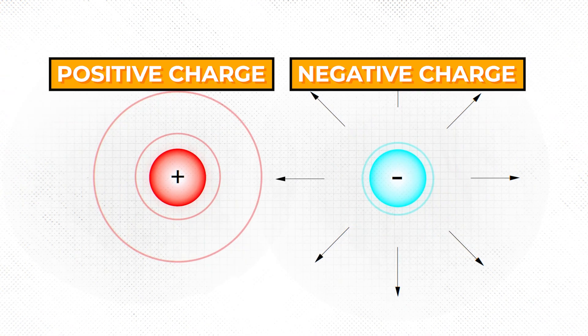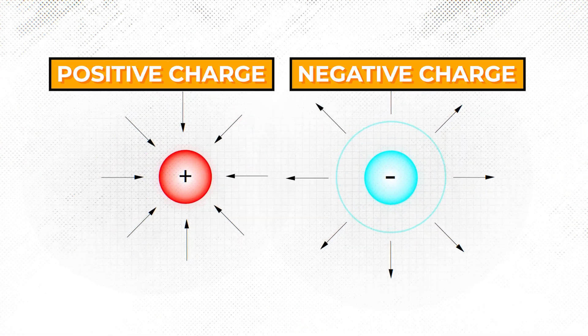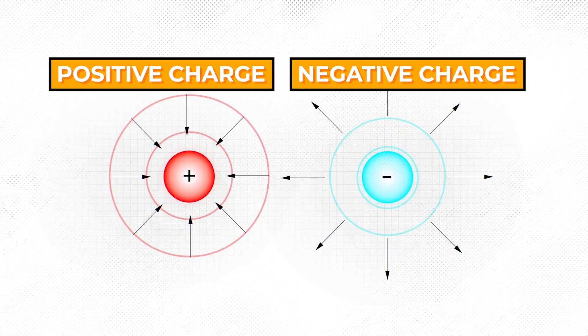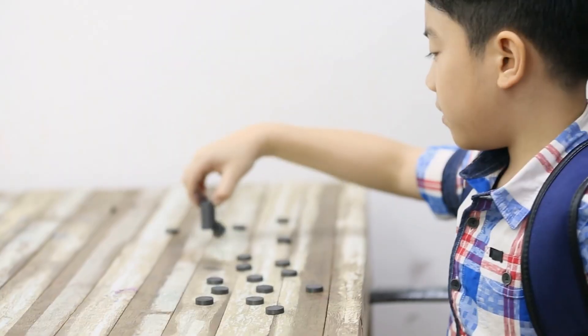Electric charges naturally generate electric fields. But electric charges are not the most convenient way to generate electricity. The most convenient way to generate electric fields, and as a consequence, electricity, is by using magnets.